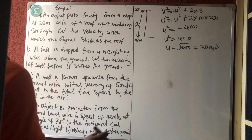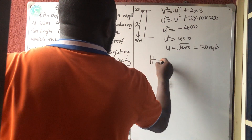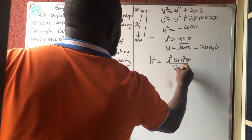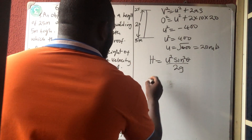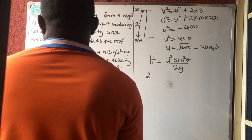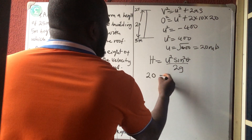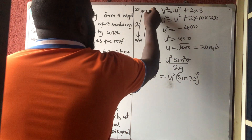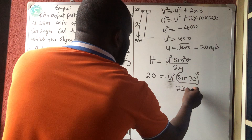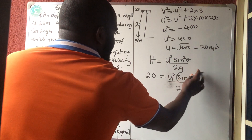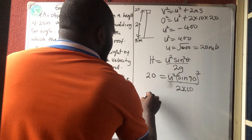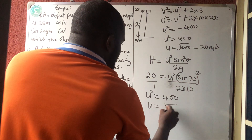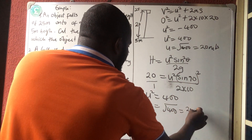If you want to use the formula, the formula for maximum height is H equals U squared sine squared theta all over 2G. So 20 equals U squared times sine 90 all squared, divided by 2 times 10. Sine 90 is 1, so U squared equals 400, and U equals square root of 400, which is 20 meters per second.